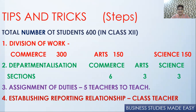Then comes departmentalization. There are 300 students who've taken commerce — they cannot be put in one section. So sections of 50 students each are made: commerce has six sections, arts has three departments, and science has three departments. This is the second step called departmentalization.